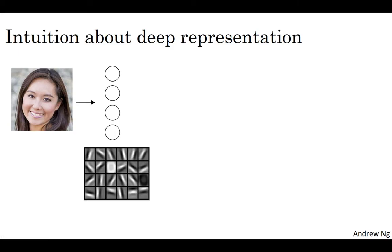In this example, I'm plotting what a neural network with maybe 20 hidden units might be trying to compute on this image with the 20 hidden units visualized by these little square boxes. So for example, this little visualization represents a hidden unit that's trying to figure out where are the edges of that orientation in the image. And maybe this hidden unit might be trying to figure out where are the horizontal edges in this image. And when we talk about convolutional networks in a later course, this particular visualization will make a bit more sense.